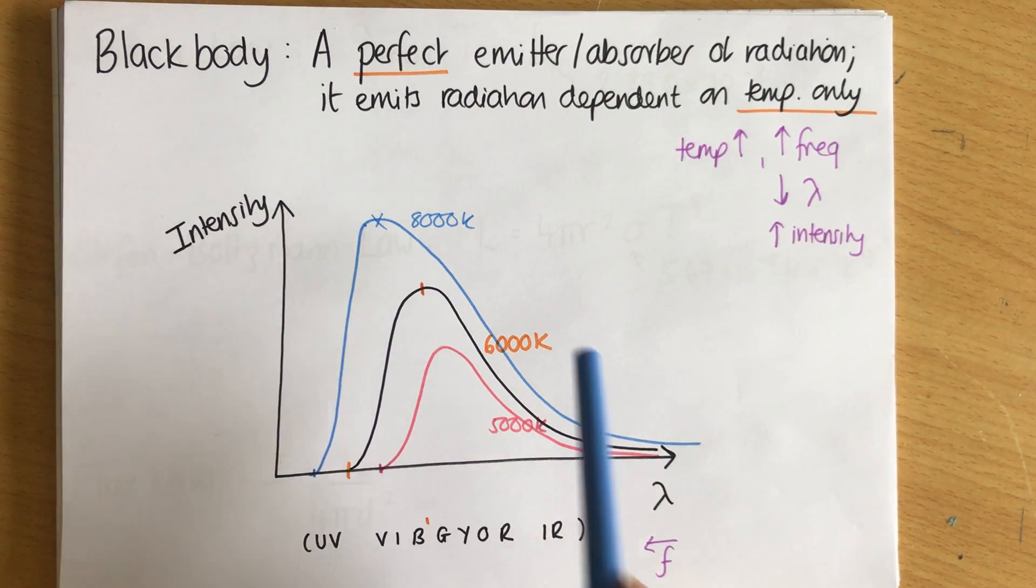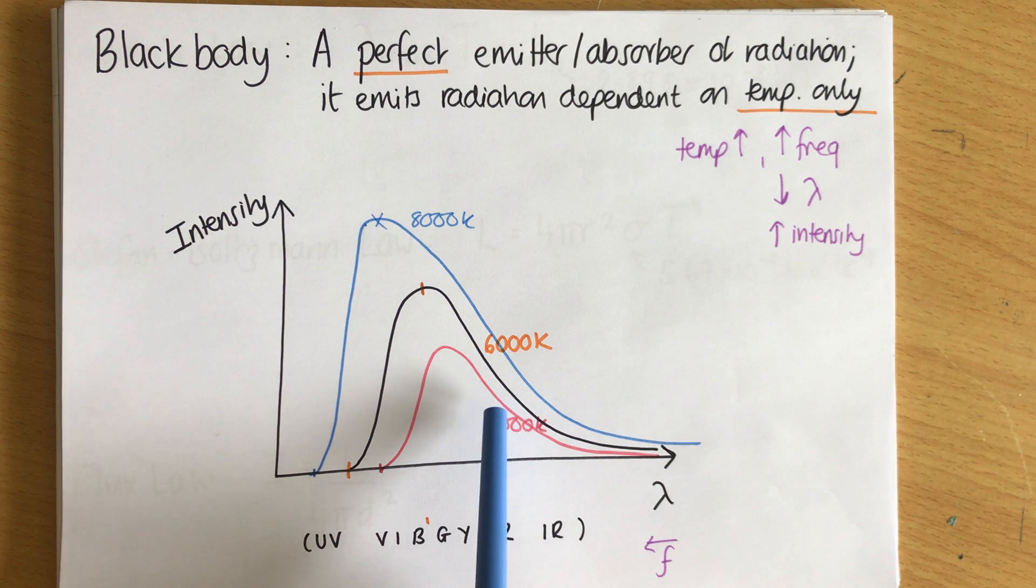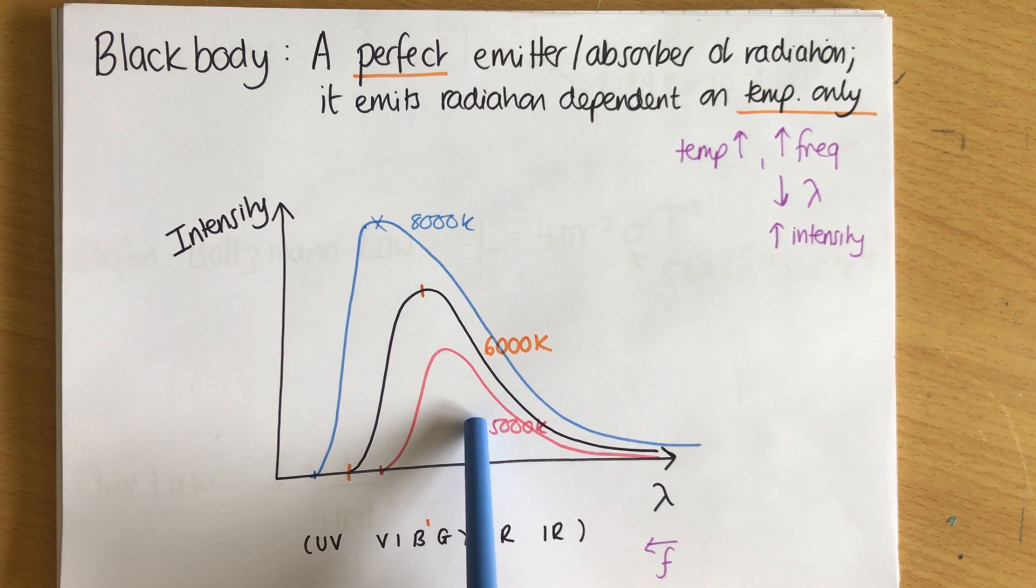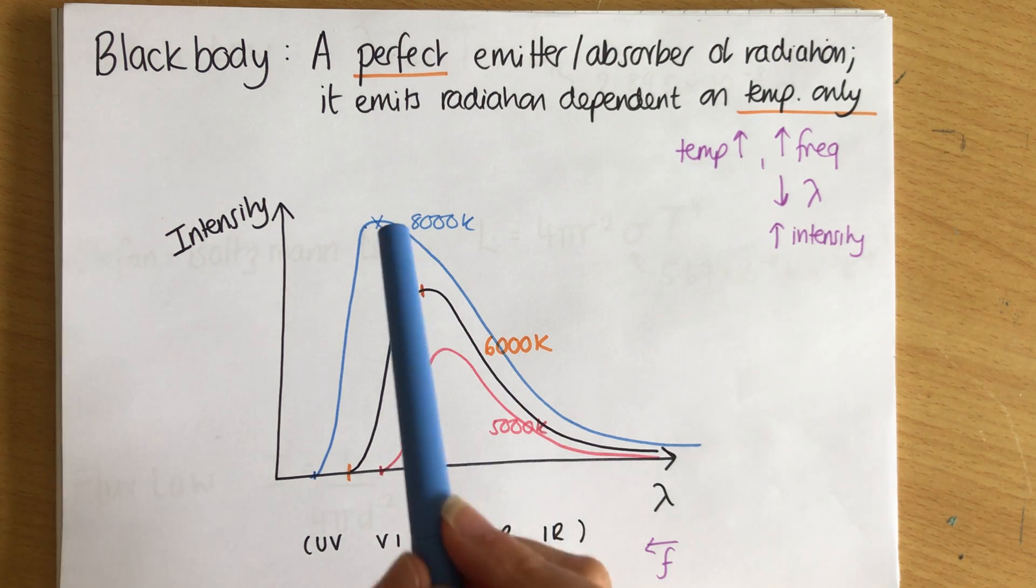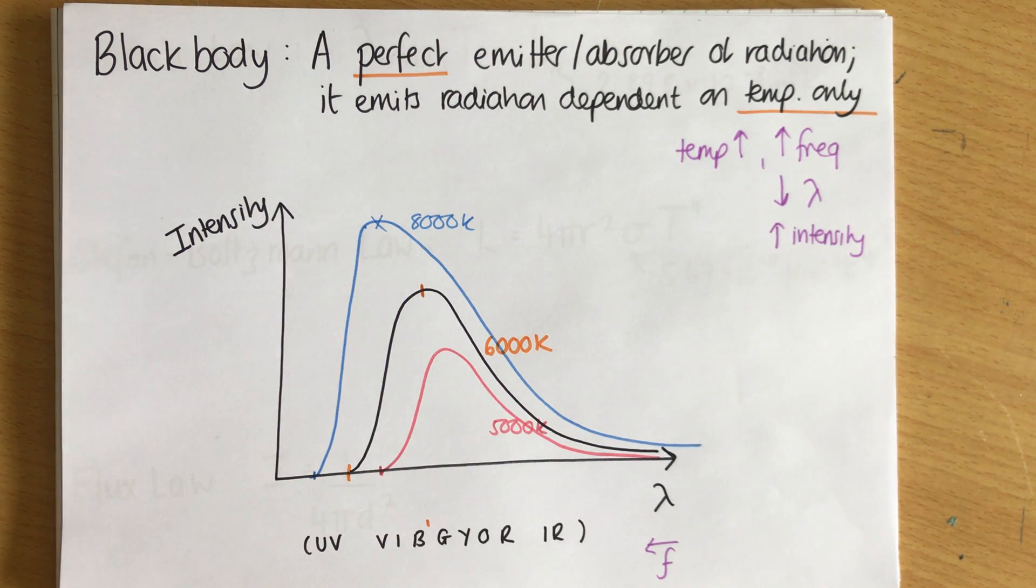So this blue star is emitting more infrared than the orange-y-yellow star, because it's hotter, but it's emitting even more blue and purple light.